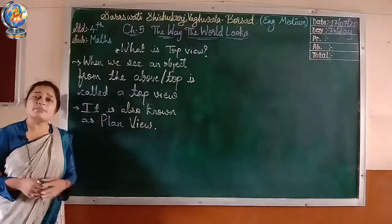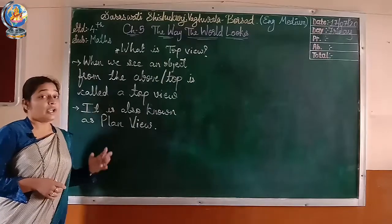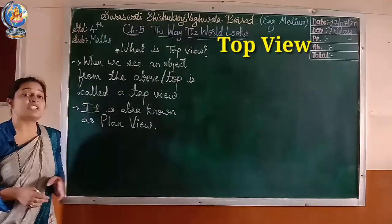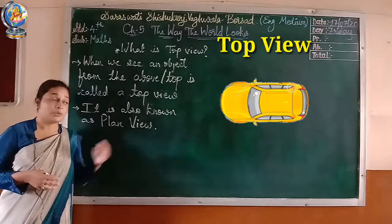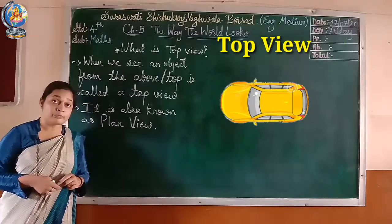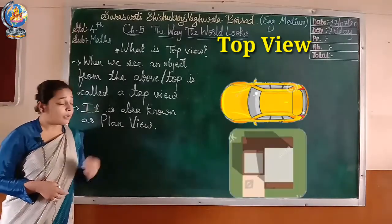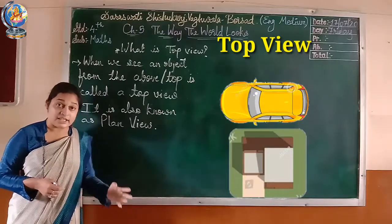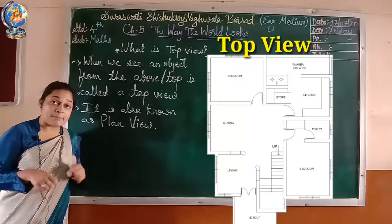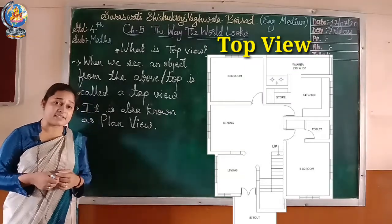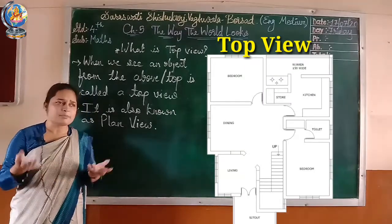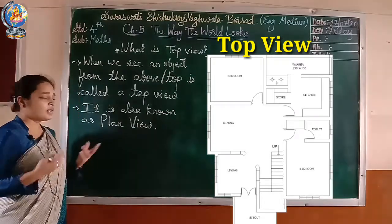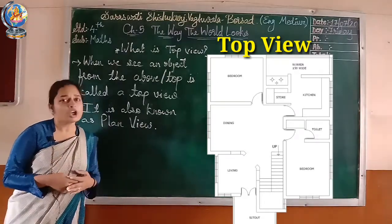Let's see some objects as a top view. You can see the picture of a car from the top view, then a building from the top view. You can also see a map — you can take a map of any place and find that place from a top view.